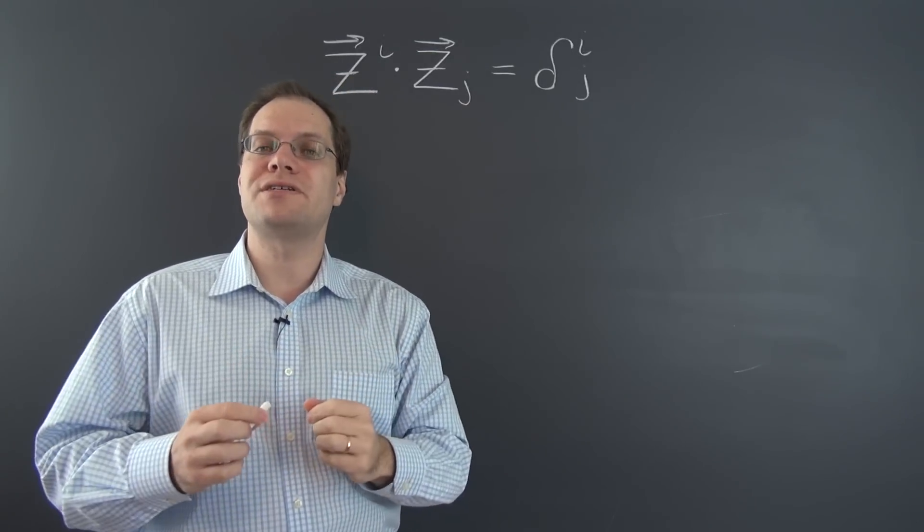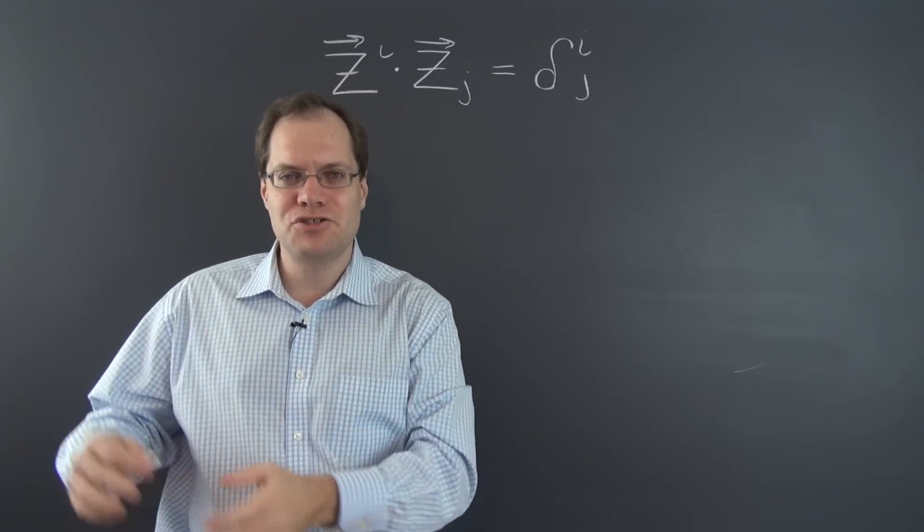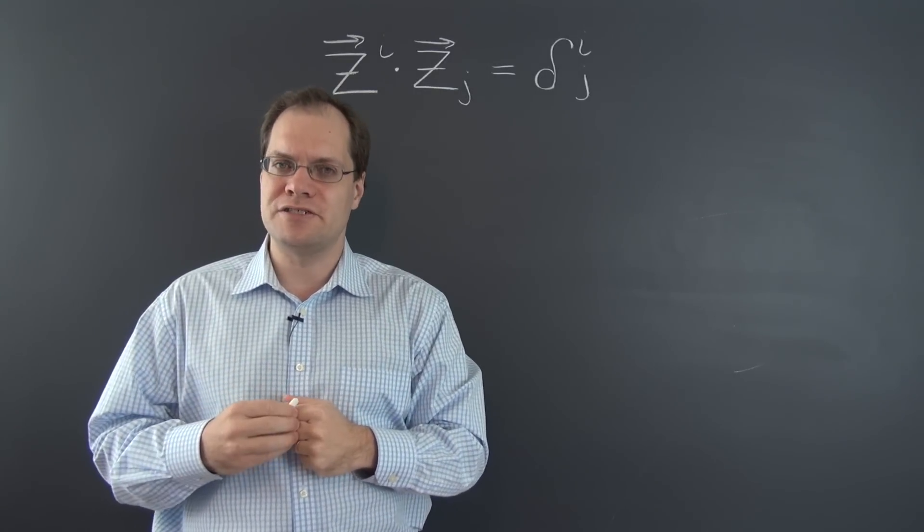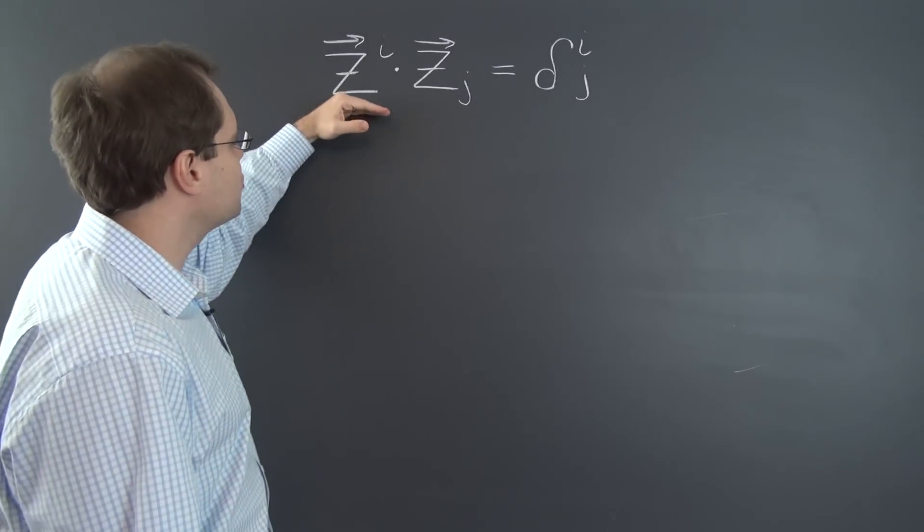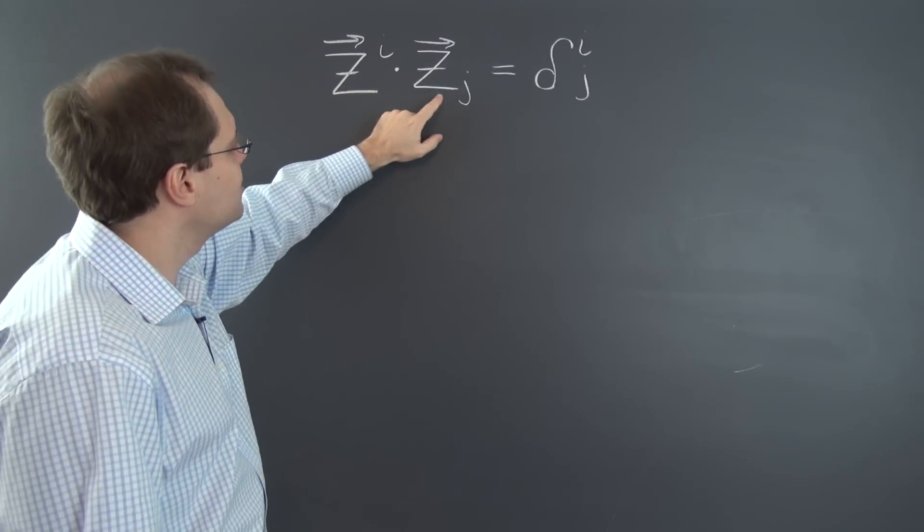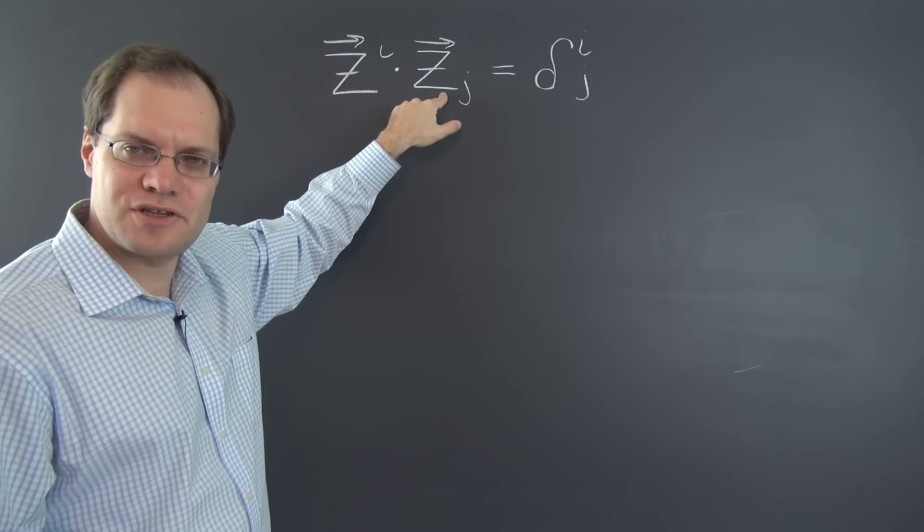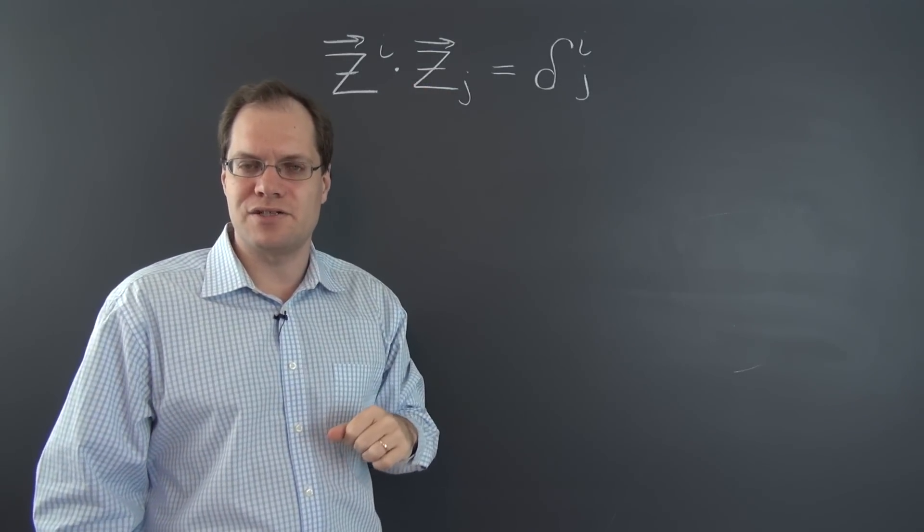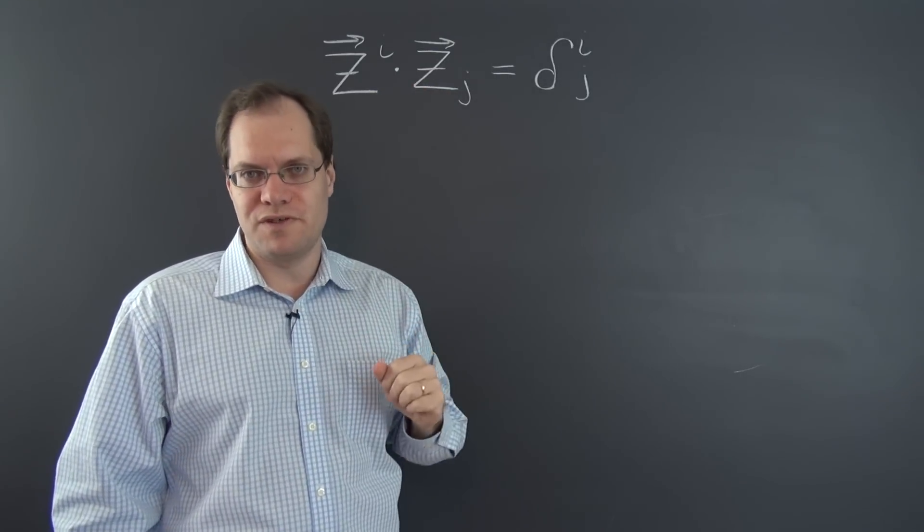The contravariant metric tensor is defined as the matrix inverse of the covariant metric tensor. That's the definition. And the definition of the contravariant basis element is, of course, a contraction between the covariant basis element and the contravariant metric tensor. And that will prove this relationship.